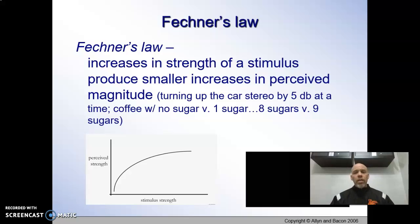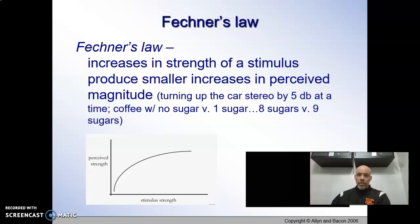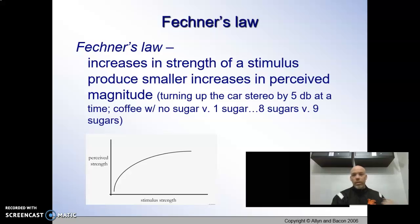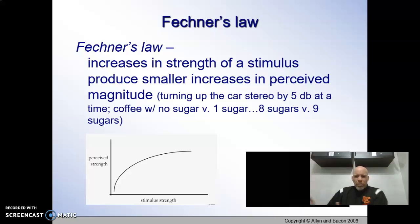With Fechner's Law — stay with the weights here — the increase in the strength of a stimulus produces a smaller increase in perceived magnitude as I add stuff to it. So if I have 10 pounds and I add 0.2 pounds, I'm going to notice it about half the time. If I have 100 pounds and I add just 0.2 pounds, I'm never going to notice that, because the increase in the strength of the stimulus produces a smaller increase in me being able to detect that difference. So just another way to think about Weber's Law and Fechner's Law.